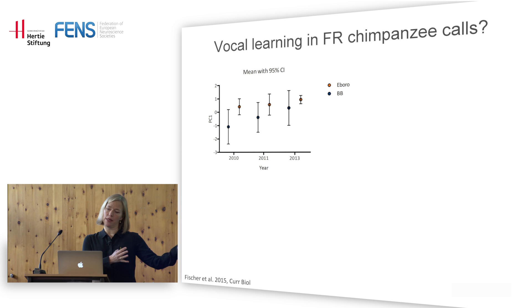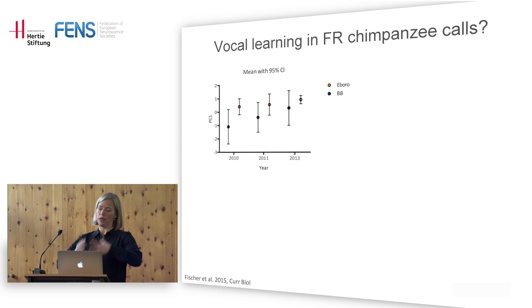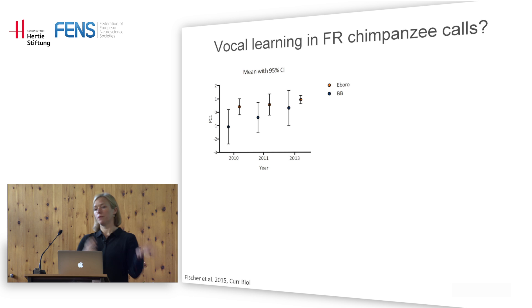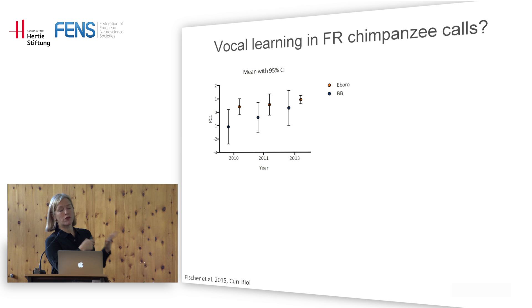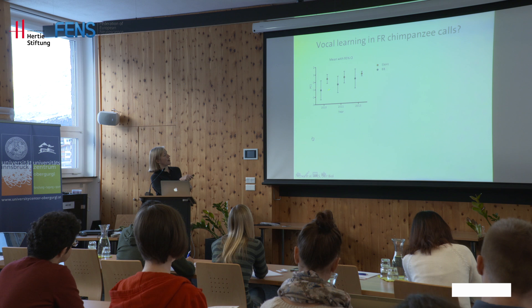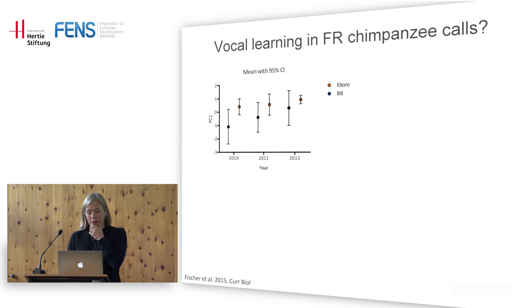They had two groups of chimpanzees — one housed in the Netherlands and one at Edinburgh Zoo — brought together in Scotland. They found that animals from the Netherlands started to sound like the Scottish chimps, with a principal component analysis showing the Scottish chimps didn't change their acoustic features while the Dutch chimps sounded more like the Scottish chimps in the end. I asked Simon Townsend if they would make the data available, which they kindly did.